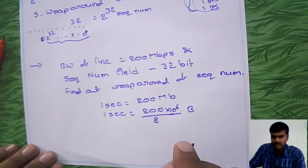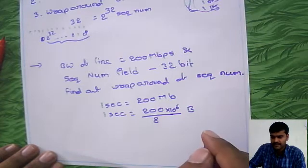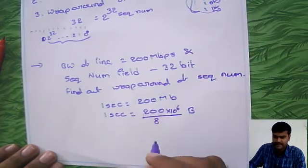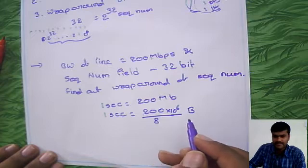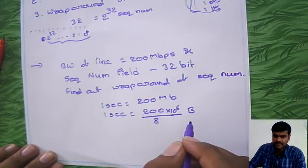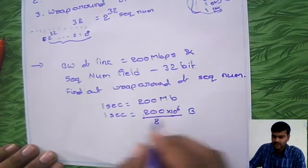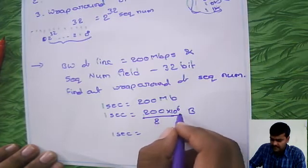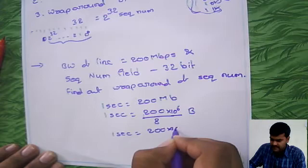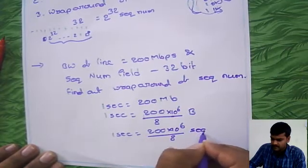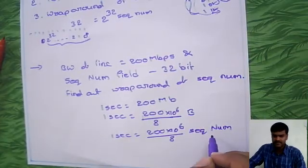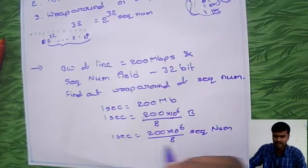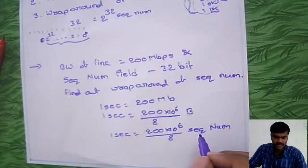Now if you see here, this many bytes it is transmitting in one second. And we said that for each byte we give one sequence number. And this many bytes of data. So in one second, it is able to transfer this many sequence numbers. Because for each byte we are giving one sequence number. So this many sequence numbers it is transmitting in one second.